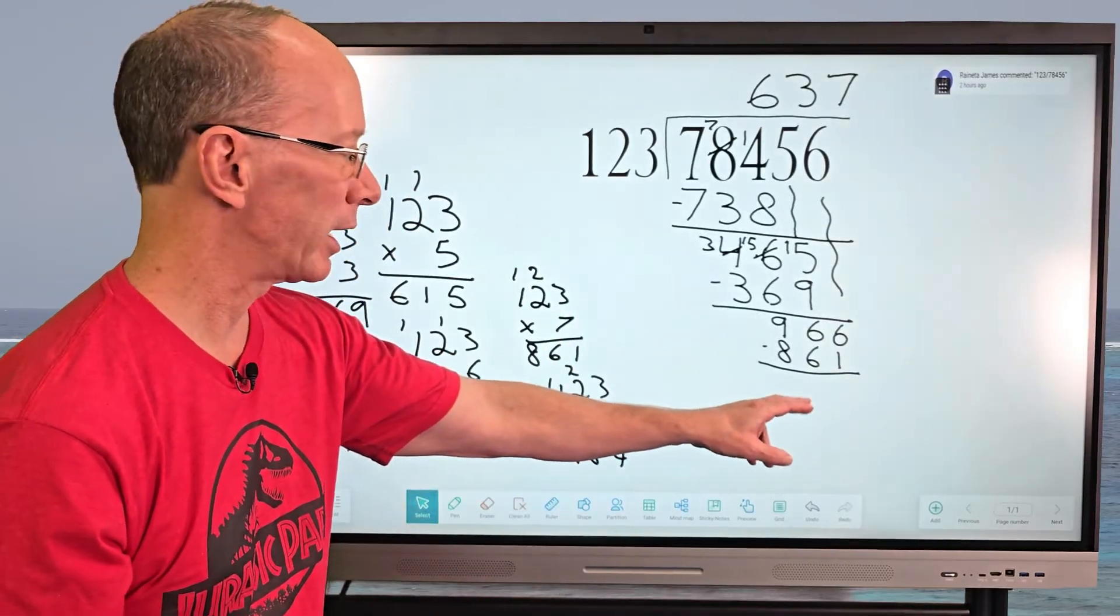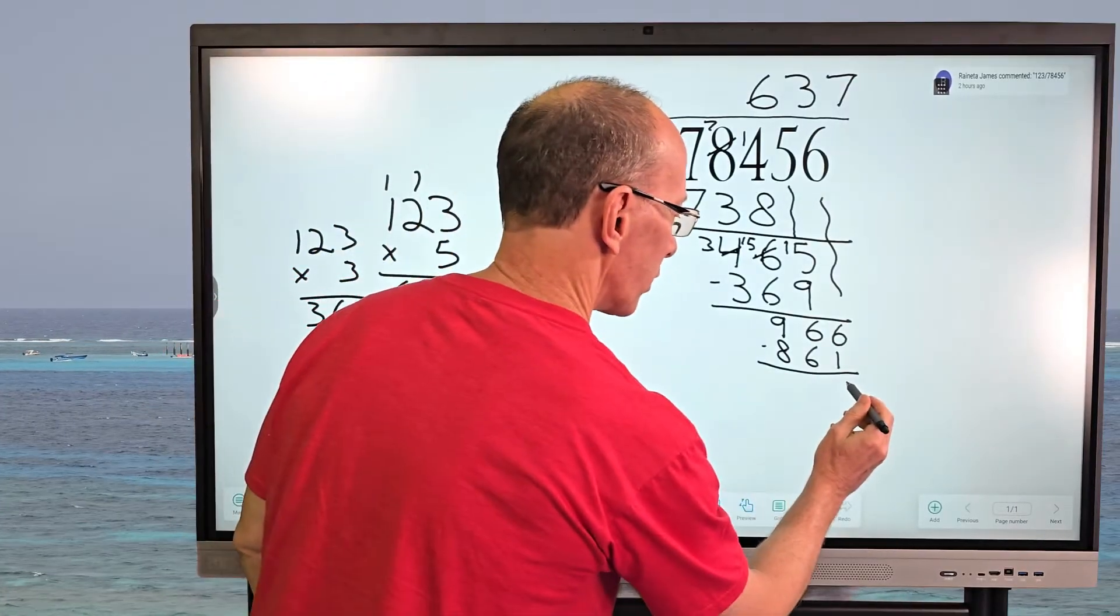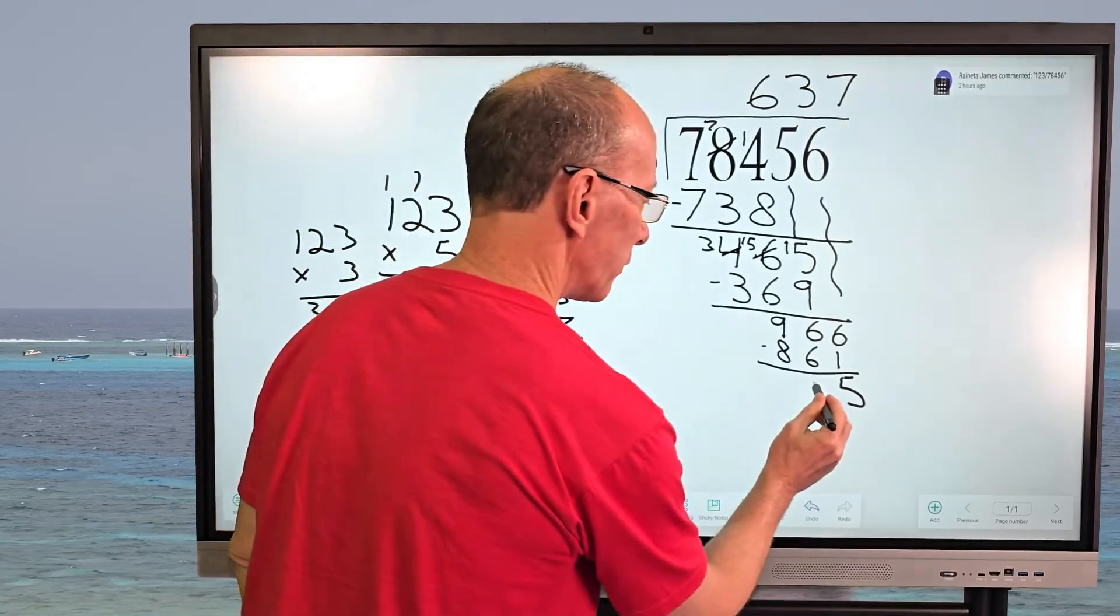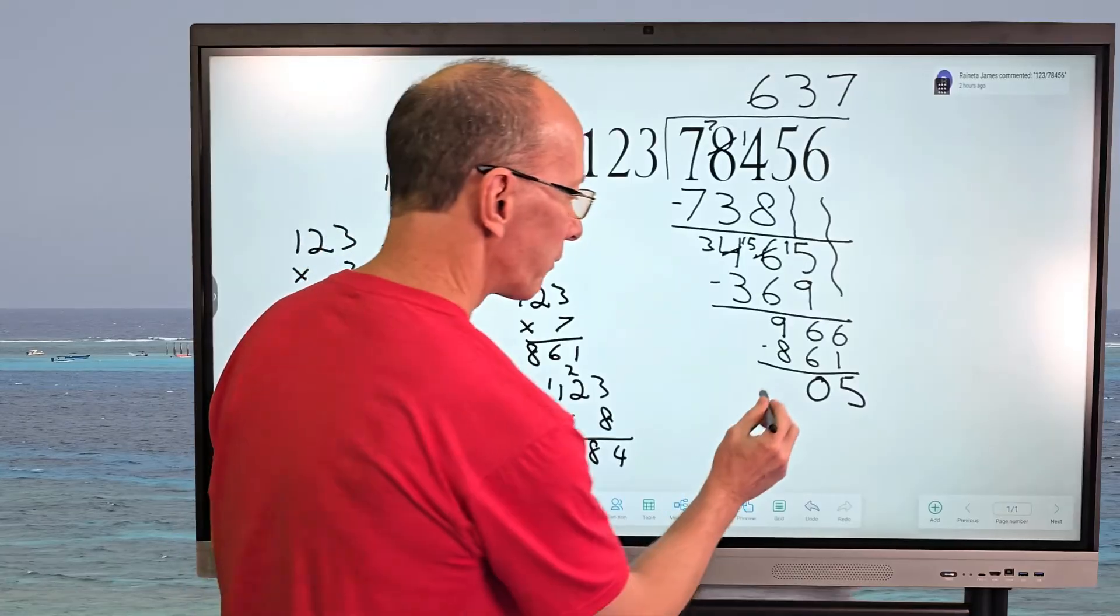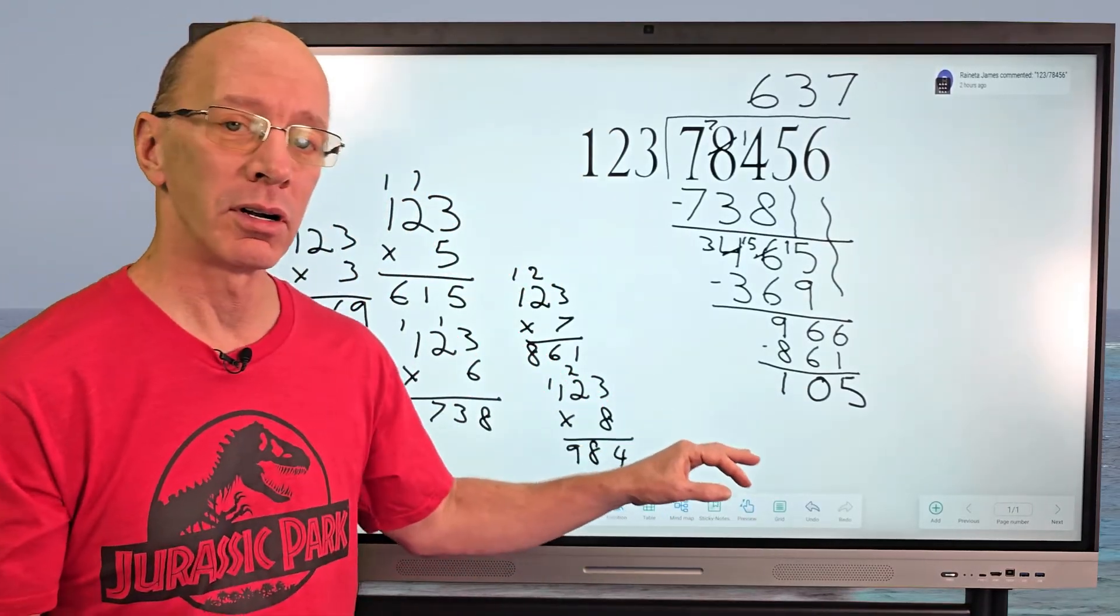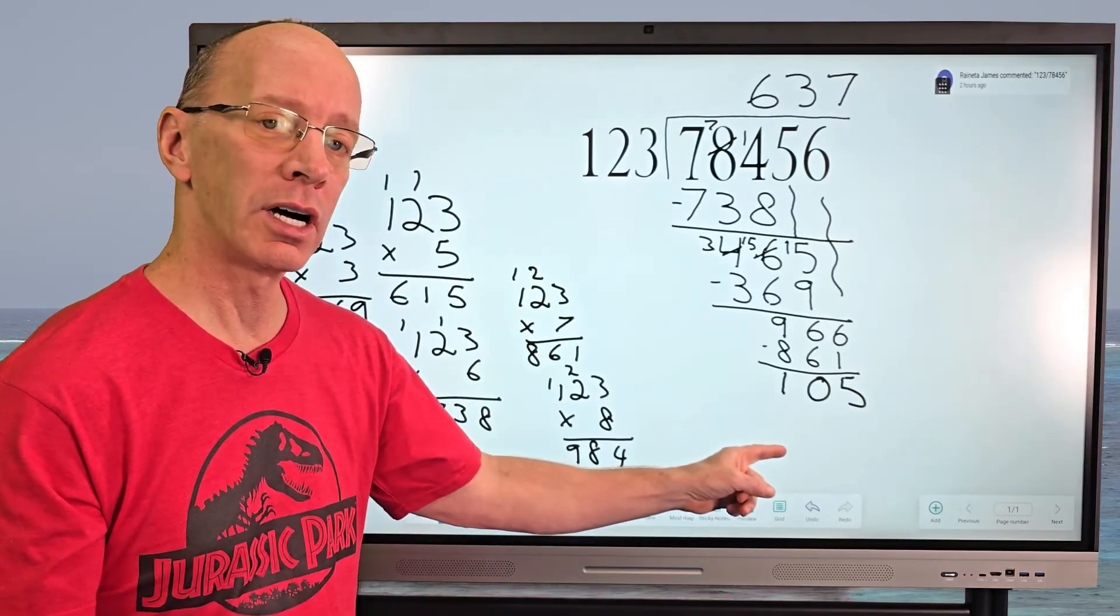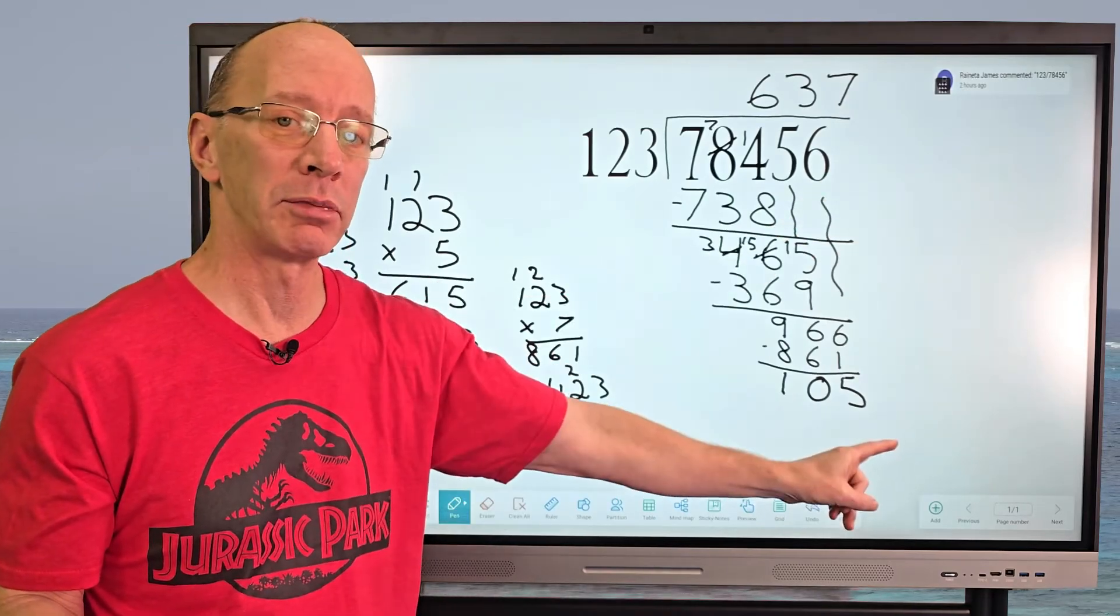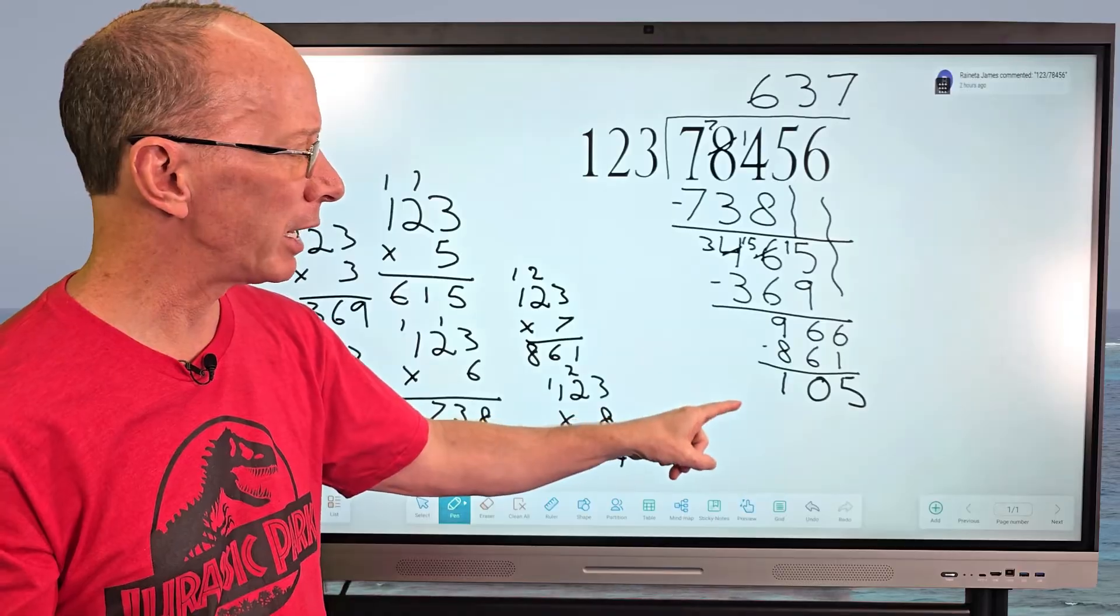So let's go ahead and subtract six minus one equals five. So I go ahead and put the five right here. Six minus six equals zero. And then nine minus eight equals one. Now you're like, wow, that's a big number for remainder. But can I put 123 into 105? No, you cannot. Is there any other number to drop down? There is not. So this would be a remainder of 105.